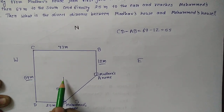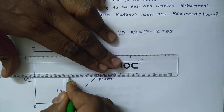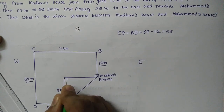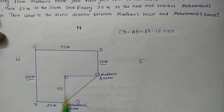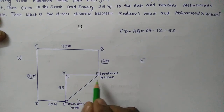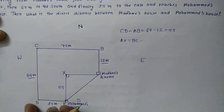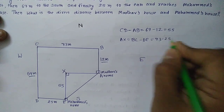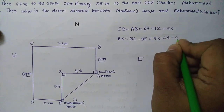Now we should find out the other distance. Here also it makes a 90-degree angle. BC and DE are both parallel to each other. I will put the point, let us say X. So the distance AX is equal to BC minus DE, that is 73 minus 25, which equals 48. So this distance will be equal to 48.